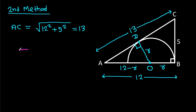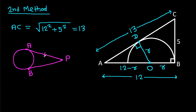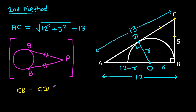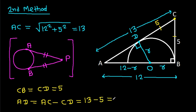Now, in any circle, from any external point P, if we draw two tangents to the circle touching at points A and B, then PA equals PB. So from point C, CB will be equal to CD. That will be 5, so CD is 5. And AD will be AC minus CD, which will be 13 minus 5, that will be 8. So AD is 8.